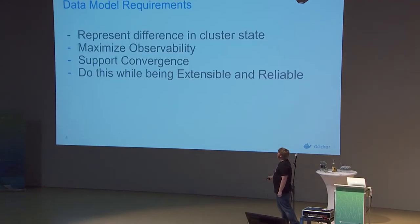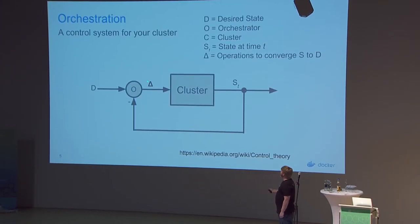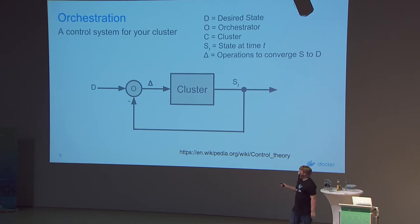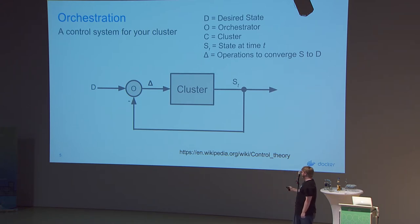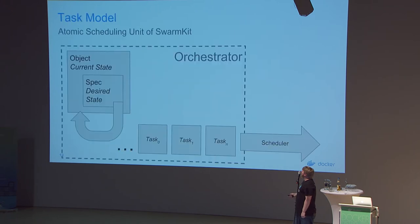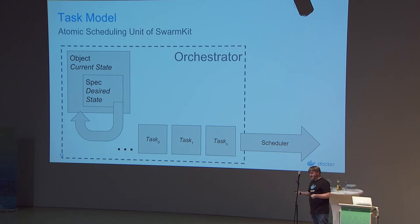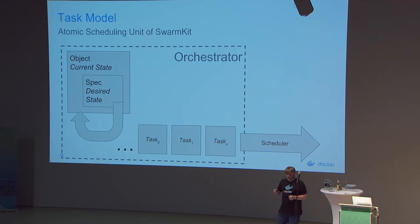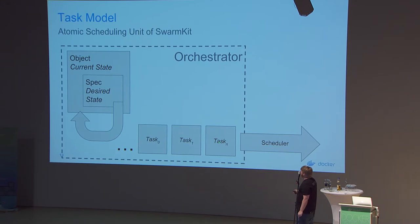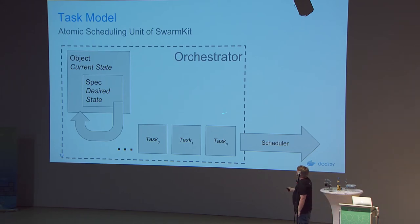Going back to the control system slide, we have this delta concept. If this were a power controller it would be a voltage signal, but inside a cluster system we have tasks. We try to send these tasks within the cluster to get a certain set running. You have a spec desired state and a current state, and you're observing that these tasks are running. If you say you want three container replicas, the orchestrator ensures there are actually three tasks in a running state.